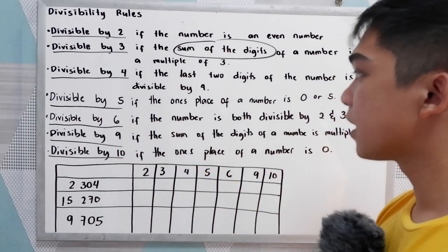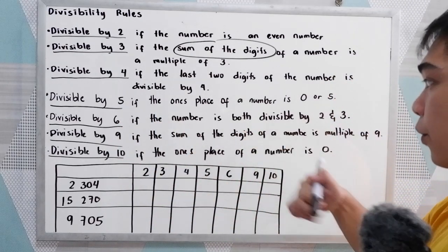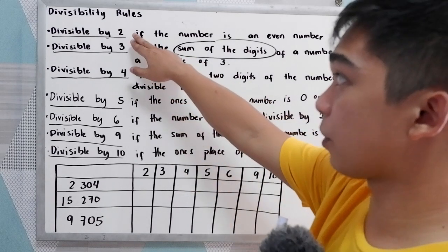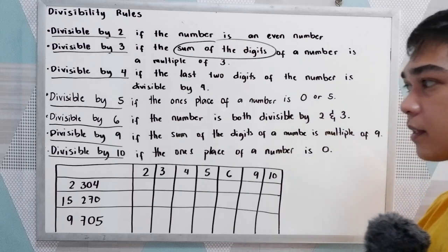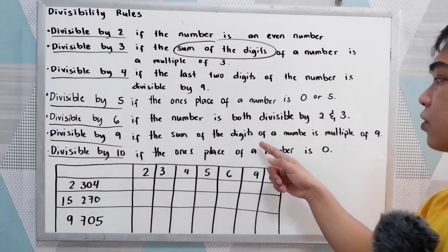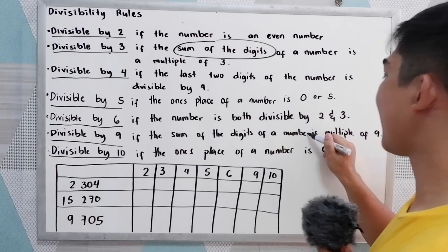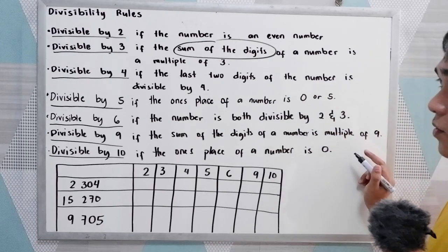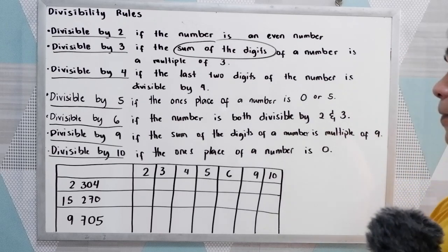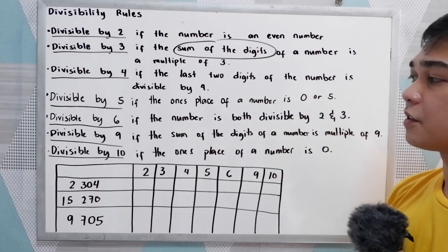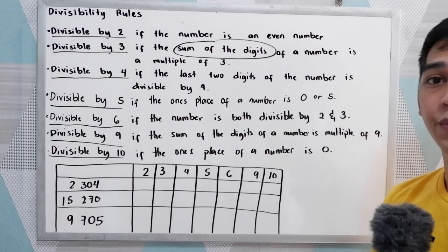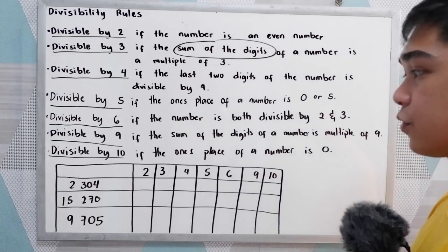Divisible by 6: if the number is both divisible by 2 and by 3. Divisible by 9: if the sum of the digits of the number is a multiple of 9 — similar to our rule for divisible by 3. And divisible by 10: if the ones place of the number is 0, meaning the number ends with 0.